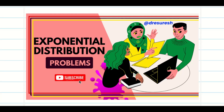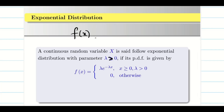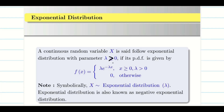In today's session, we are going to learn the definition of exponential distribution, and we are going to see what is meant by memoryless property and some problems on this distribution. First of all, we recall that exponential distribution belongs to continuous distribution. The definition of exponential distribution is as follows.